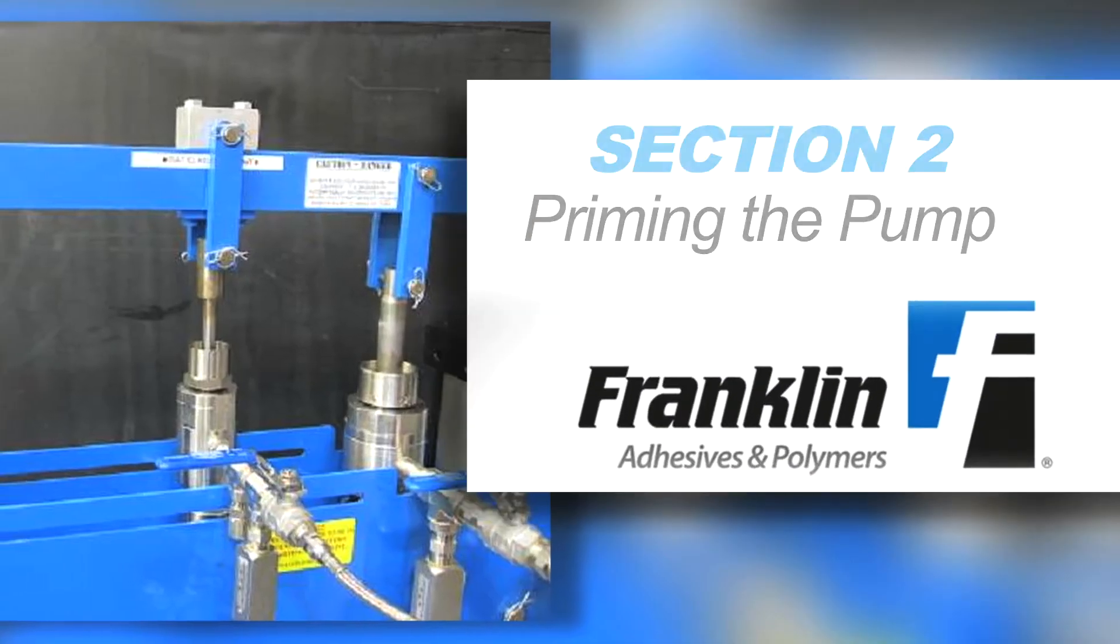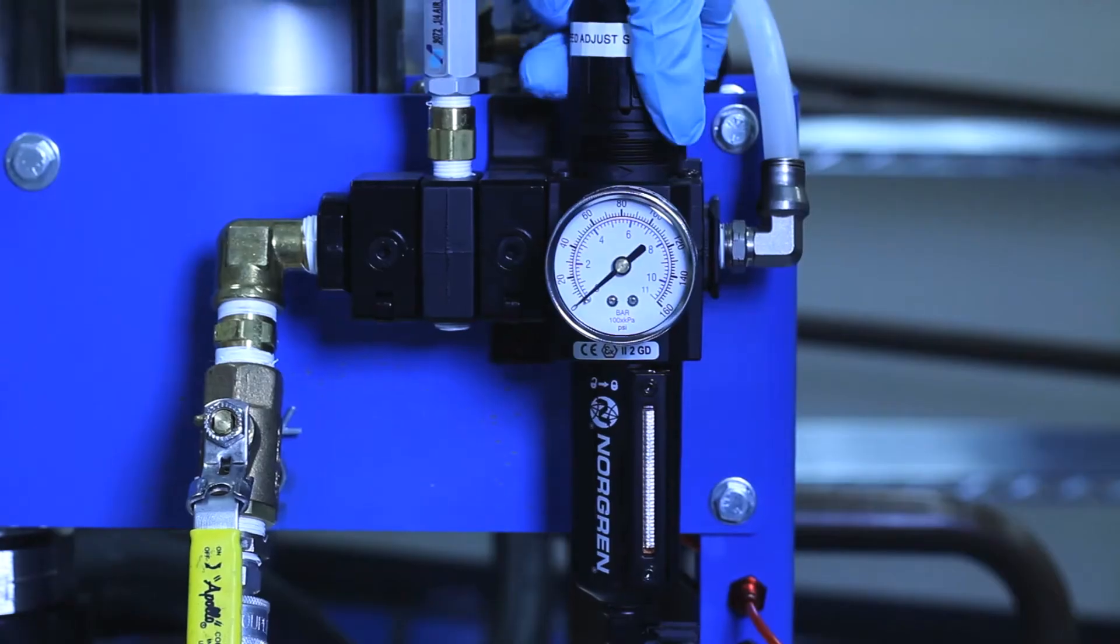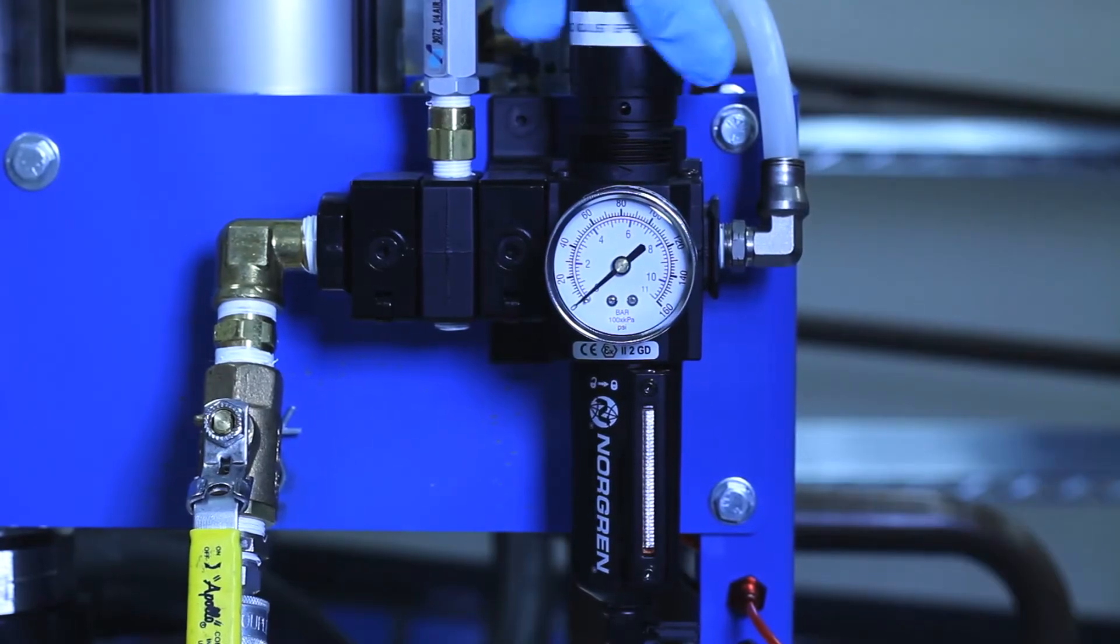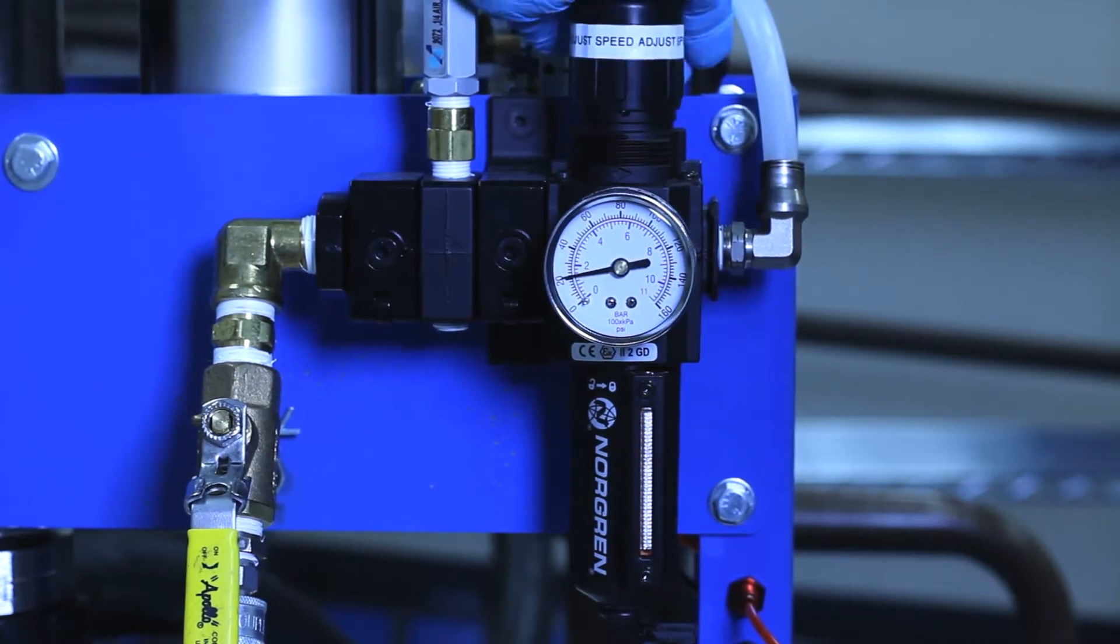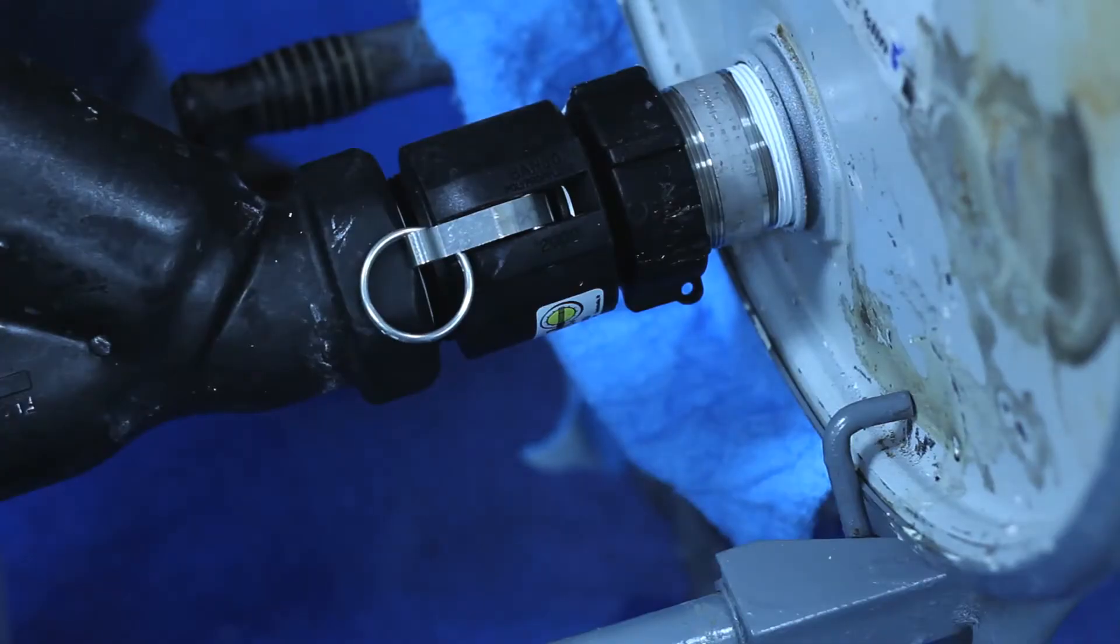Section 2. Priming the Pumps. Rotate the pressure regulator clockwise until the regulator reads 20-25 psi, which is the minimum needed to cycle the unit. Next, you should open the manual supply valves from the resin and hardener containers.